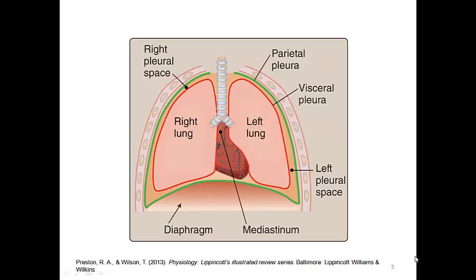Now let's look at the pleura. The pleurae are thin serous membranes that cover the lungs. Similar membranes cover the heart, known as the pericardium, and the viscera in the abdominal cavity, known as the peritoneum. The pulmonary pleurae have two essential functions: to create a hermetic seal and to secrete pleural fluid. The lungs themselves are lined by the visceral pleura. Each lung is enclosed within its own pleural cavity with no connection between the two.